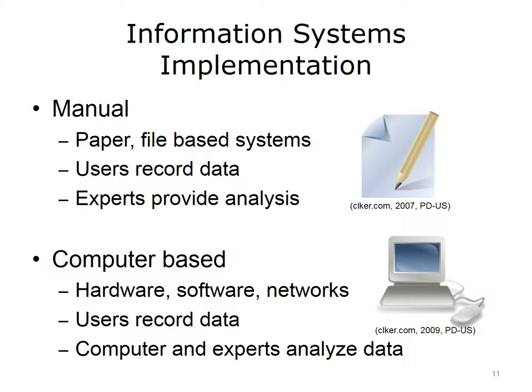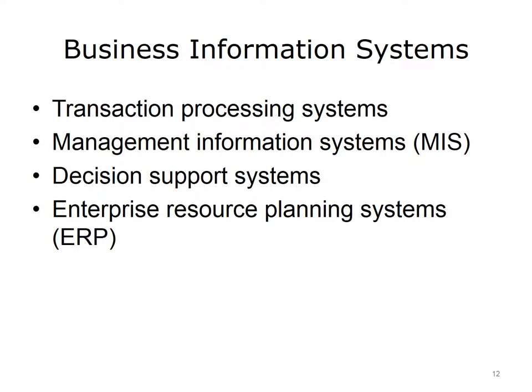There are several types of information systems used in businesses today. At the lowest level, a transaction processing system records and automates basic business transactions such as payroll payments, payments to suppliers, or sales to customers. Built on top of that is a management information system, or MIS, which uses data from the transaction processing system to provide reports for managers—tracking inventory, expenditures, and payroll costs, for example. Decision support systems use data from these systems to support business decision-making.